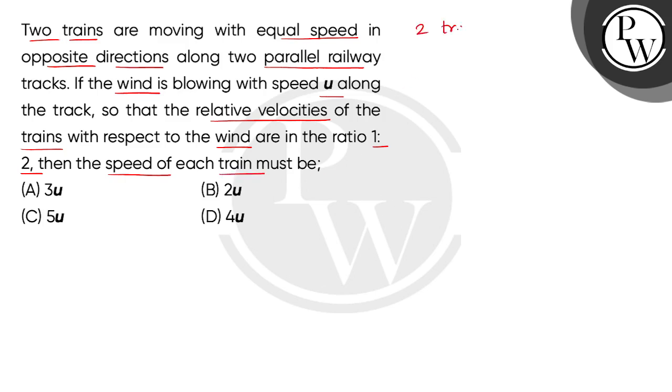Children, the question has given us two trains which travel in opposite directions. Here we say that these are the two parallel tracks. This is train 1, suppose its speed is v.